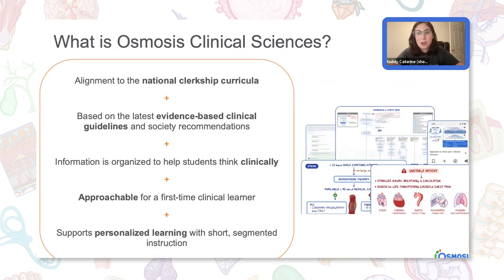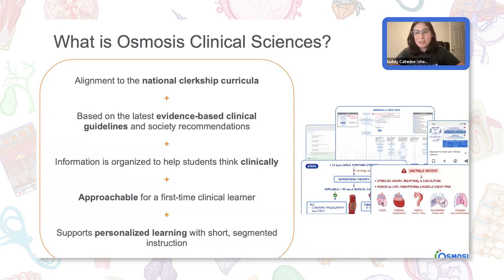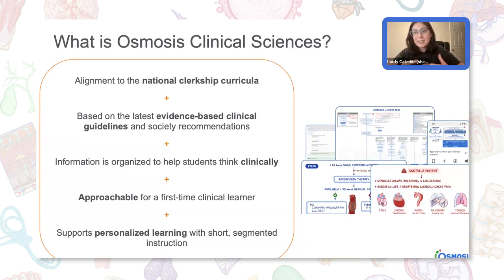If you've been a member of Osmosis before, you know we specialize in whiteboard style animation videos, high yield notes, and assessment items, and we've really focused on basic sciences like anatomy, physiology, and pathology. With this new clinical sciences content, we're getting more into clinical rotations and setting students up to start thinking clinically. This content is aligned to the national clerkship curriculum, based on the latest evidence-based clinical guidelines and society recommendations, and it's organized in a clinical way to help you use information in your clinical decision making.